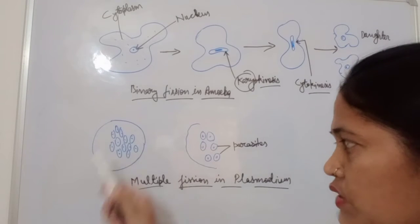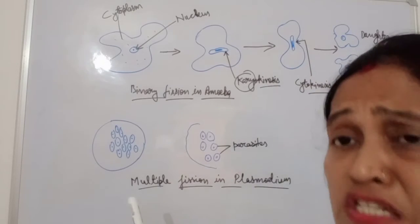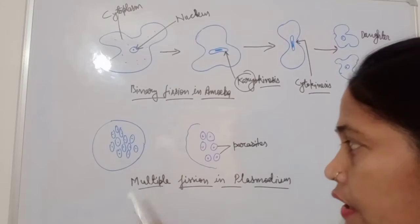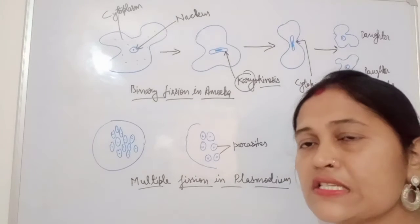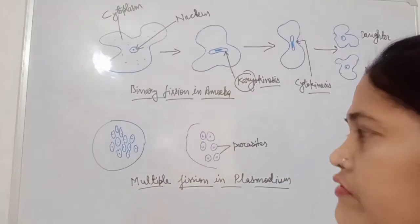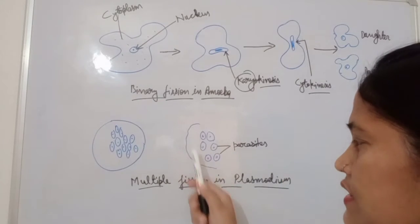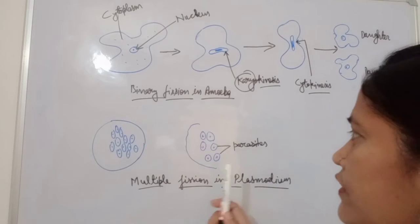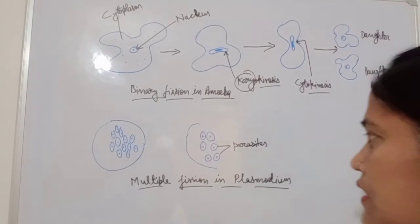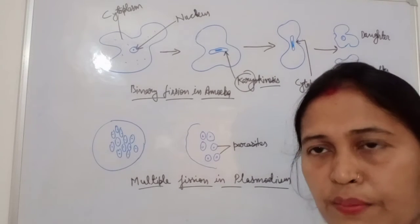Multiple fission in Plasmodium: Plasmodium is the malaria parasite present in our red blood cells. In this process, the nucleus multiplies repeatedly a number of times, and after multiplication the RBC finally bursts, releasing a large number of Plasmodium parasites. This is the example of multiple fission in Plasmodium.